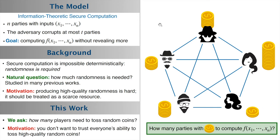In this work, we ask a related question which to our knowledge was never asked before: how many parties need to have the ability to toss coins to be able to securely compute a function?